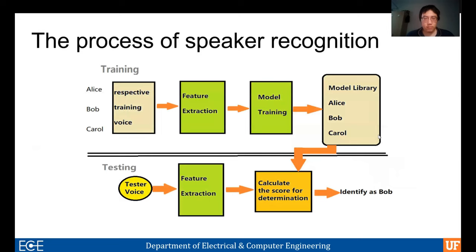A speaker recognition system (SRS), as a classical framework for pattern recognition, requires various targets to provide speech. The features of this speech are extracted, and the models are trained to form a model library. When the test target needs to be verified, a new voice is also processed through the program as the test feature, and then the test feature is compared with the target model. If the similarity score is close to or greater than the expectation value, the voice source can be matched with the database; if it is less than this value, the tester cannot be matched with the database and will not pass the test.